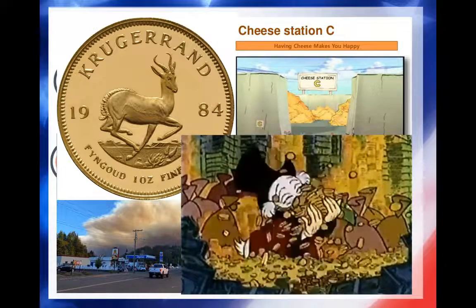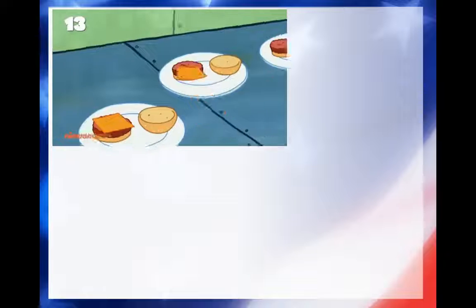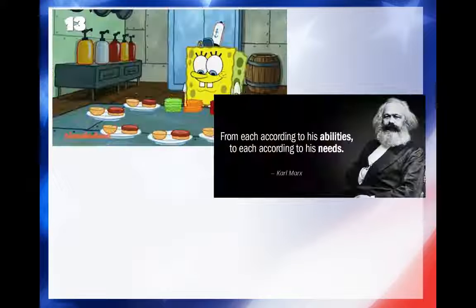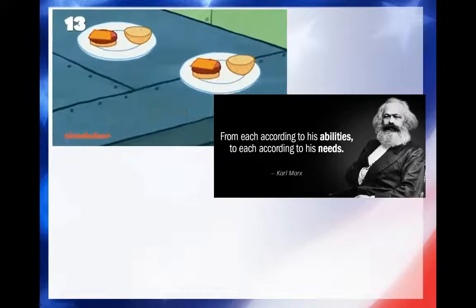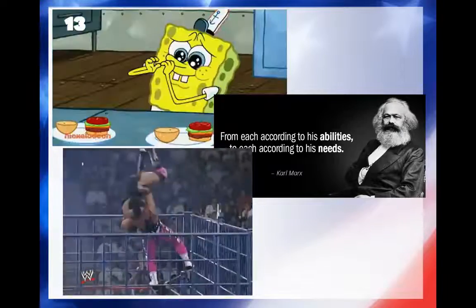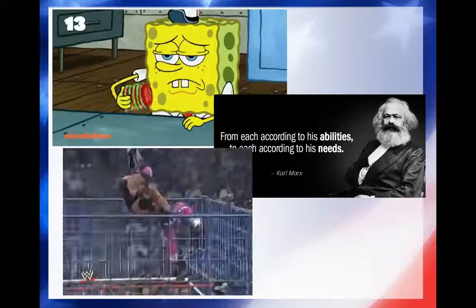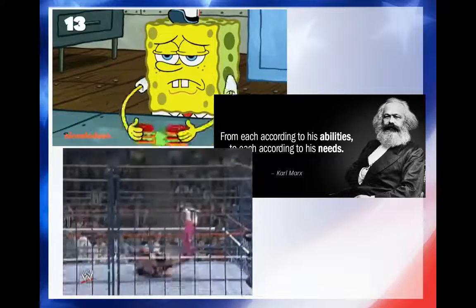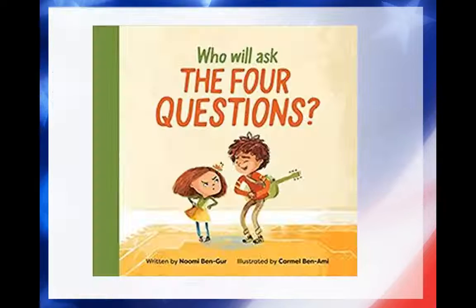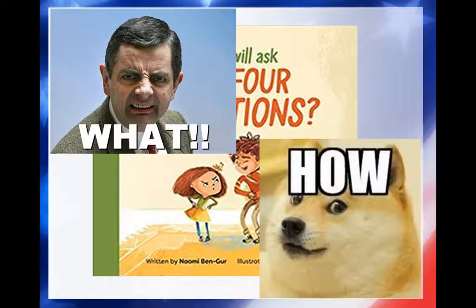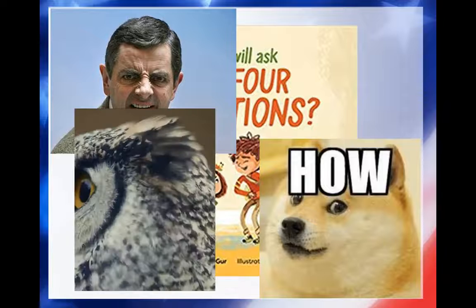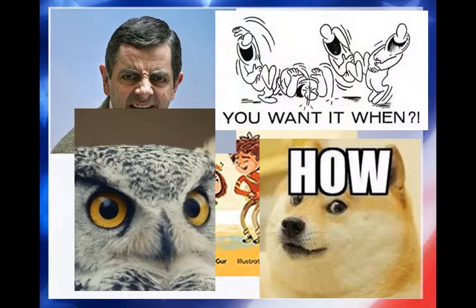So, now what? We've got to figure out how we are going to distribute the resources we have. We can do this in a number of ways: we can do one for each, like dealing a poker hand; we can give each according to his needs, like Karl Marx and later John Rawls; or we can use kind of a steel cage death match. But before we figure out how we're going to distribute our resources, we've got to ask four specific questions: What will be produced? How will it be produced? Who will get the products? And when will those products be delivered?